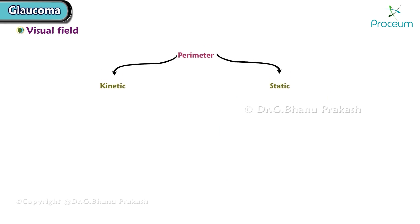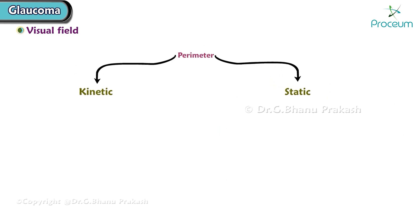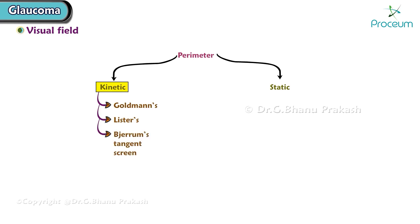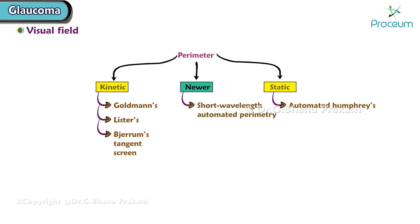Perimeters are of two types: kinetic and static. Kinetic perimeters include Goldman's perimeter, Lister's perimeter, and Bjerrum's tangent screen. Static perimeters include the automated Humphrey's perimeter. Newer perimeters are short wavelength automated perimetry and frequency doubling perimetry.